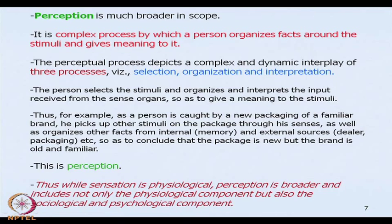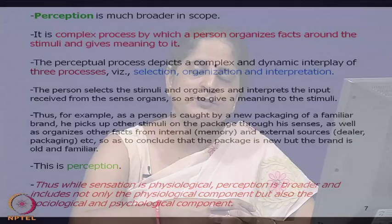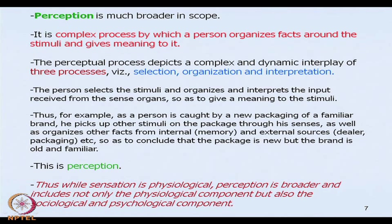When we talk about perception, we are discussing the complex mechanism or the dynamic interplay between selection, organization, and interpretation. Sensation is physiological in nature, depending upon our five sense organs, but perception is much broader, much wider, much more complex — because apart from the physiological component, it also has the sociological and psychological components which impact how meaning is given to a sensory impression. A stimulus could be in the form of a product, a brand, a store, an advertisement, or packaging.